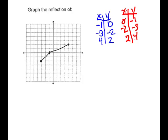So we plot (0, −1), (−2, −3), and (2, 4), and then we connect those. These are supposed to be straight lines — hopefully I can draw them straight. And you can see that flips across the line y equals x.